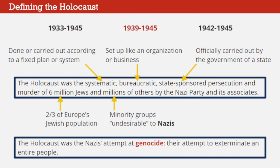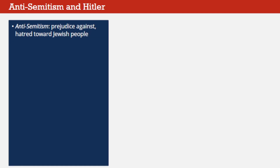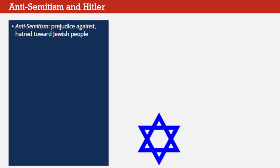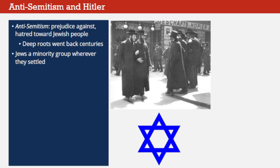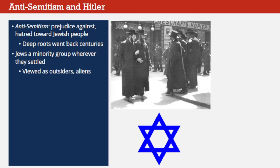If Hitler had achieved his true goal, he would have murdered all the world's Jews, as well as many others he wished to remove from the gene pool of the human race. To understand the Holocaust, we must first learn about its roots in anti-Semitism, the prejudice against, or hatred toward, the Jewish people. In early 20th century Europe, anti-Semitism was a tradition with deep roots that went back many centuries. Jews at the time didn't have a country of their own, so they were a minority group wherever they settled in Christian Europe. Because of their religious traditions, Jews never entirely adopted the mainstream culture of the countries they lived in, which led others to view them as perpetual outsiders, or aliens.